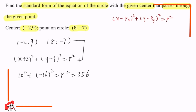So we can finally get the standard form equation of a circle: (x + 2)² + (y − 9)² = 356. That is the answer.